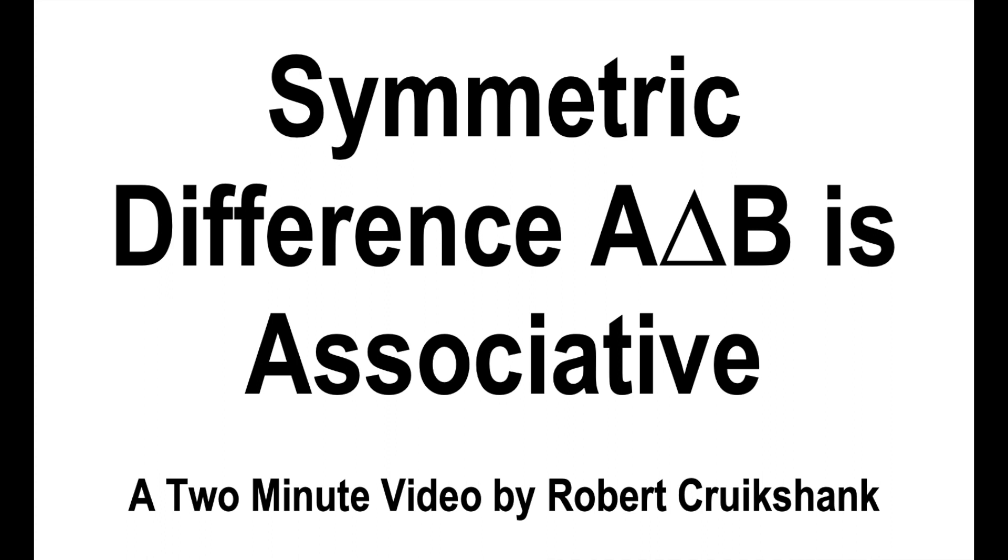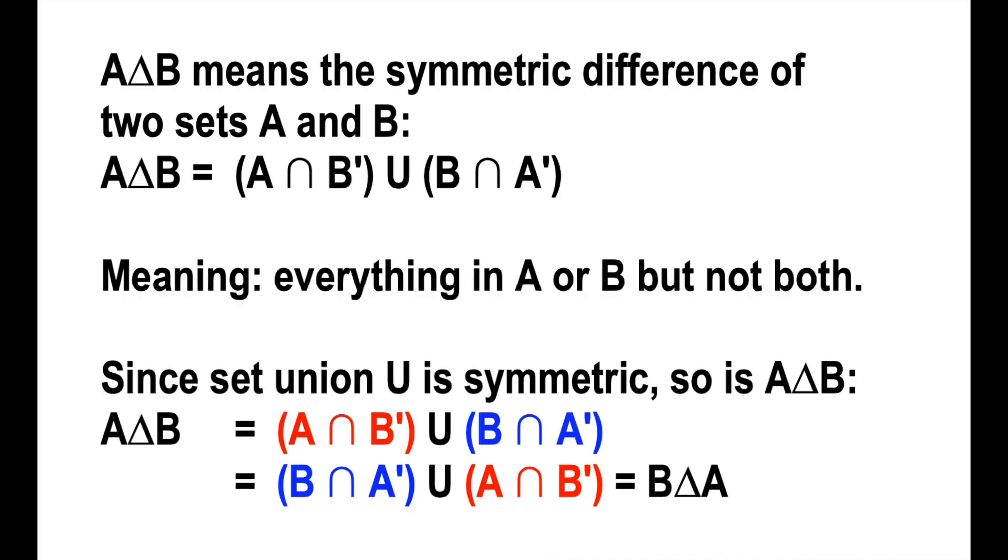Symmetric difference of A and B is associative. A triangle B means symmetric difference. It's defined as A intersect B complement, union, B intersect A complement.